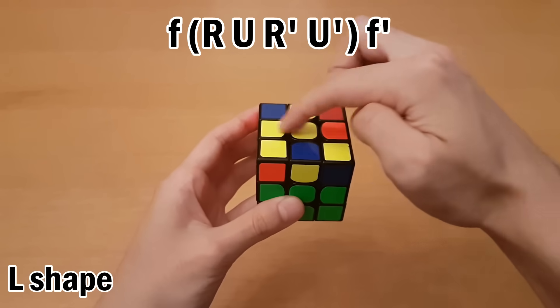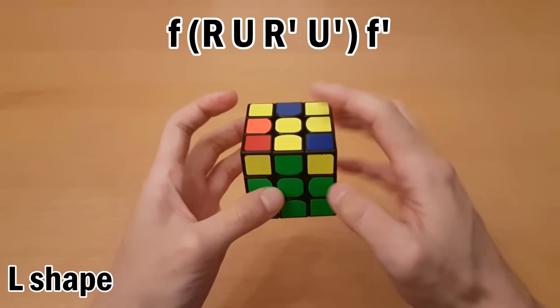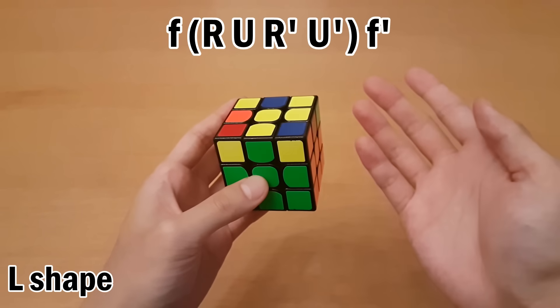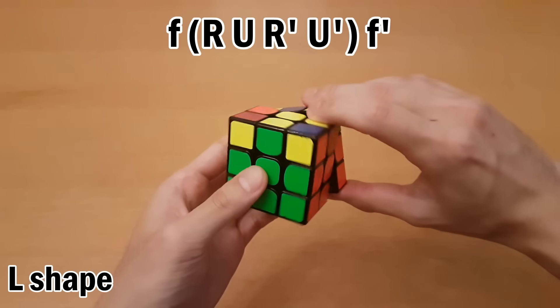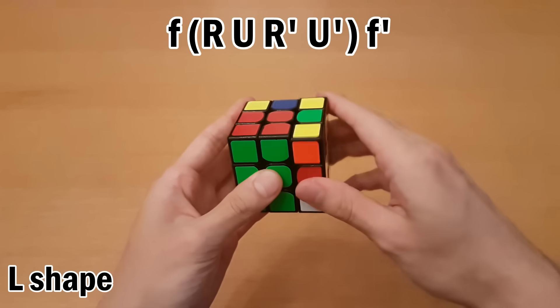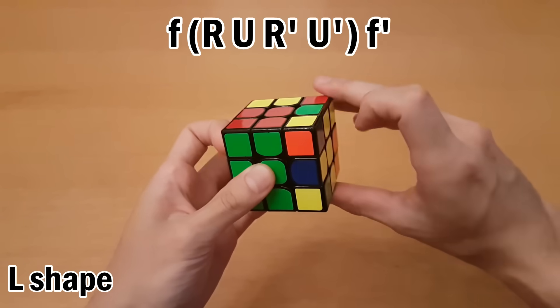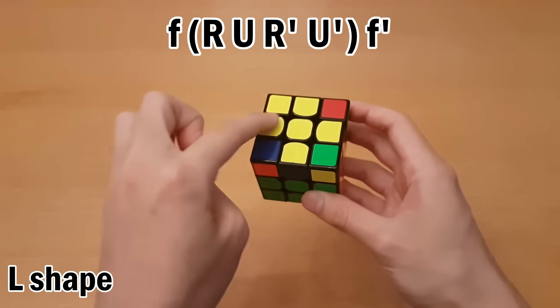If you get two edges next to each other like an L shape, then hold that on the front and the right like this. Then you do the exact same algorithm except the front moves are with double layer. So that goes like this: front double layer, and then R, U, R', U', and then double layer front, and then that's the cross.